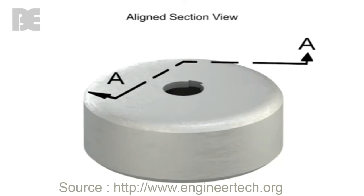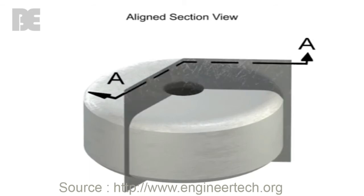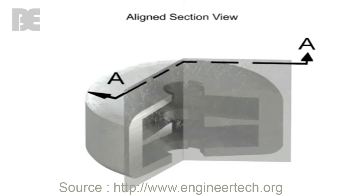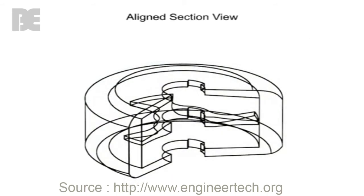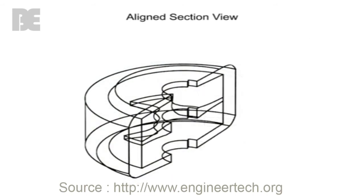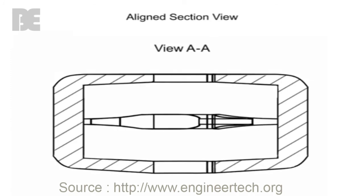Aligned views are typically used with complex or circular parts with interior features that do not appear in a straight line. As with all section views to avoid confusion, ribs, webs, and other thin parts such as the spokes on a wheel are not shown with section lines.